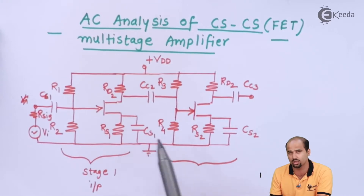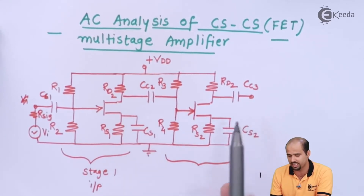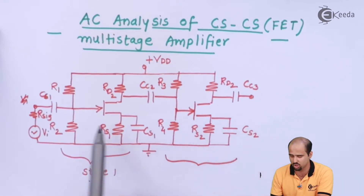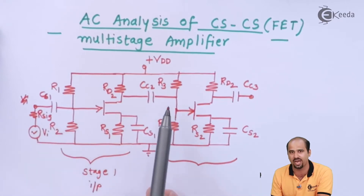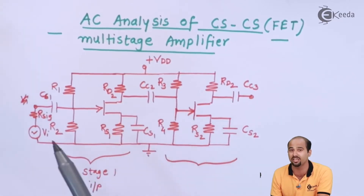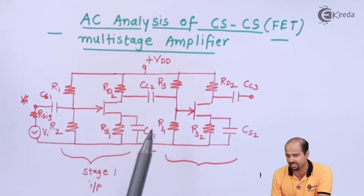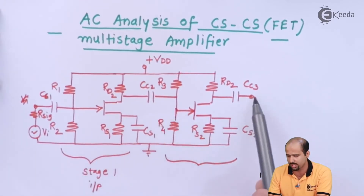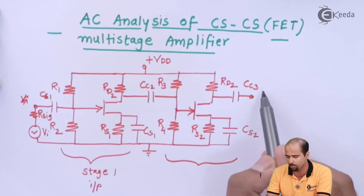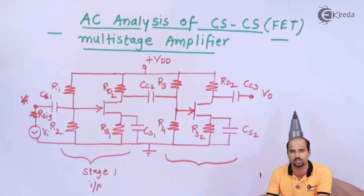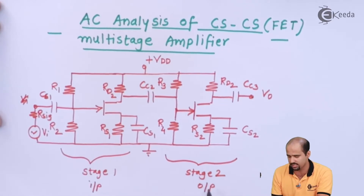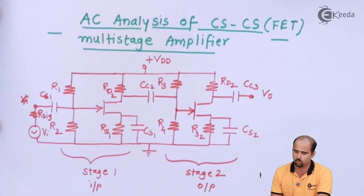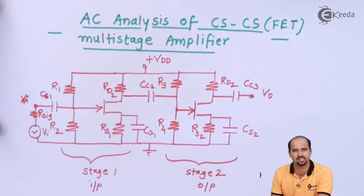The second stage is your output stage. By using the input of the first stage, the output is amplified, and that amplified output from the first stage acts as input for the second stage. So whatever output we get from stage 2 will be more strengthened than the output of stage 1, because this is a cascade nature. Stage 2 is called the output stage.